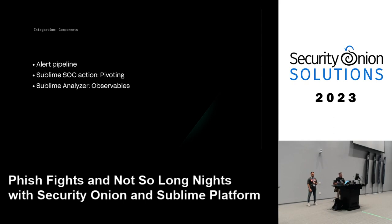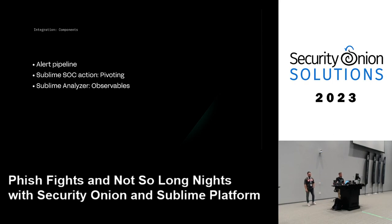The integration components are: the alert pipeline — pulling flagged alerts from Sublime Platform into Security Onion; a pivoting function from an email alert over to Sublime for more context; and observables — the ability to work with EML files directly and send them for analysis.